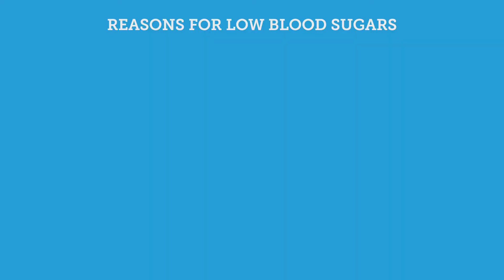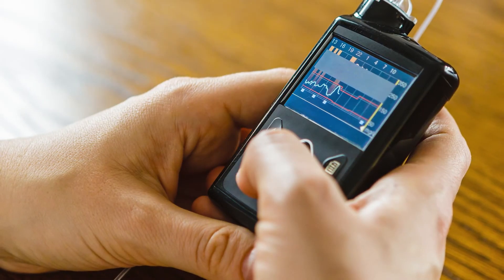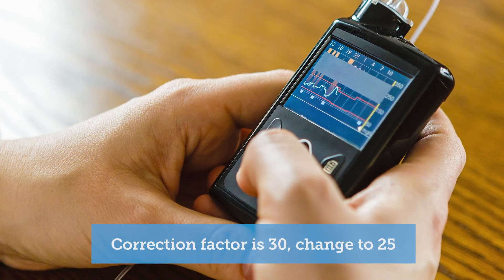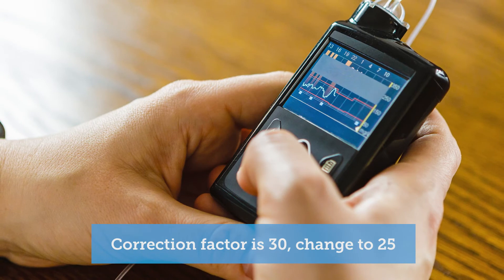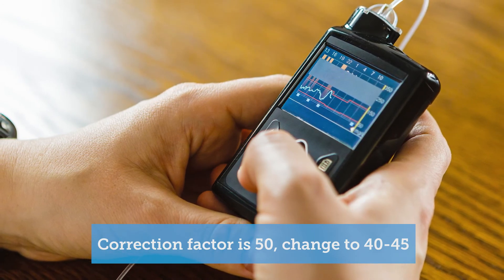If you're noticing low blood sugars, think of the opposite. You may be overestimating the number of carbs you're eating per meal, or you may be eating simple carbs and the insulin you're giving is too much for that type of meal — consider adding protein and healthy fats. Perhaps you're giving the full dose of insulin but you're about to exercise. Another reason for low blood sugars may be that your sliding scale is too aggressive. If you're noticing lows after a high, that may be why, and you need to back off your sliding scale — or in your pump, your correction factor. Consider changing it by about one unit: if your correction factor is 30, try 25; if it's 50, try 40 or 45. You could also change your target to a lower number — if it's 130, try 120.